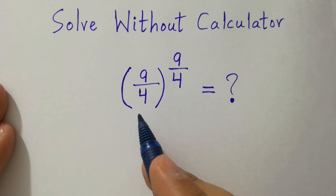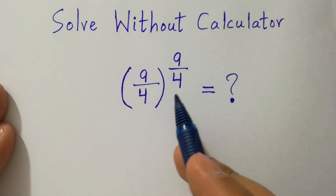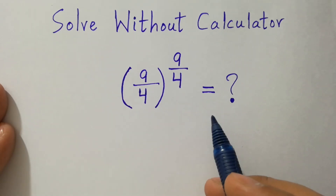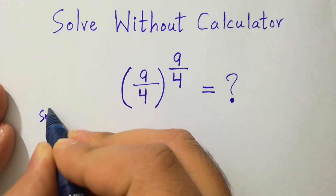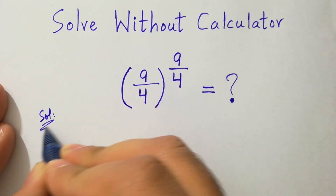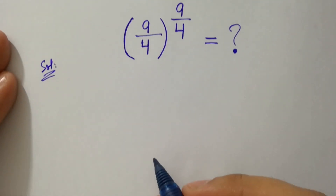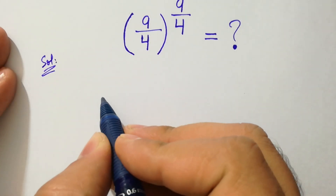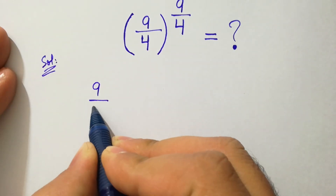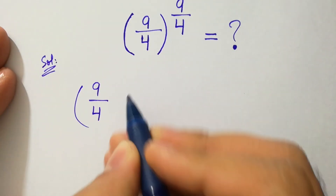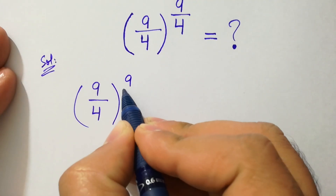Hello friends. What is 9 over 4 to the whole power 9 over 4? Let's have a solution. So we have the problem of 9 over 4 to the whole power 9 over 4.